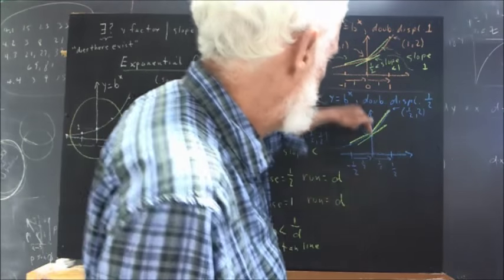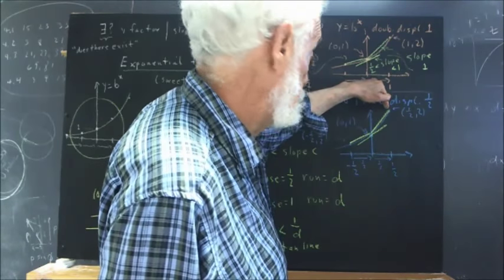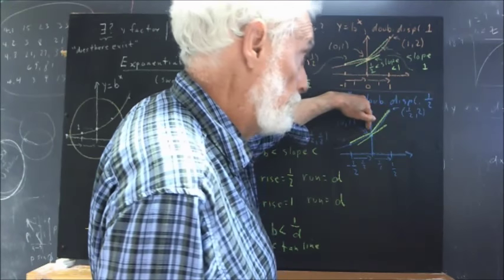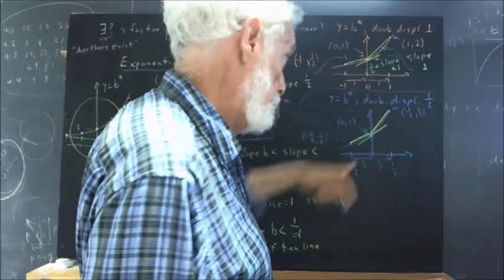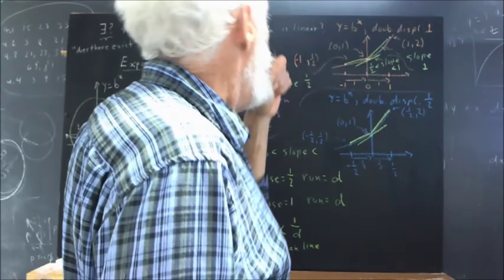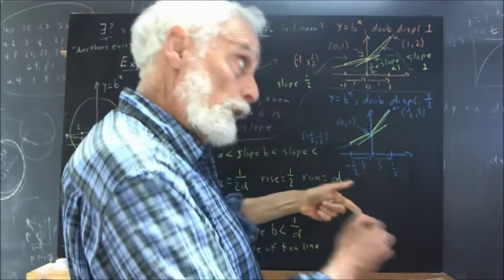And now you have the coordinates of this point and this point, so you can find the slope. You have the coordinates of this point and this point, so you can find the slope. You can find the rise. You can find the run, so you can find the slope. So you ought to do that now.